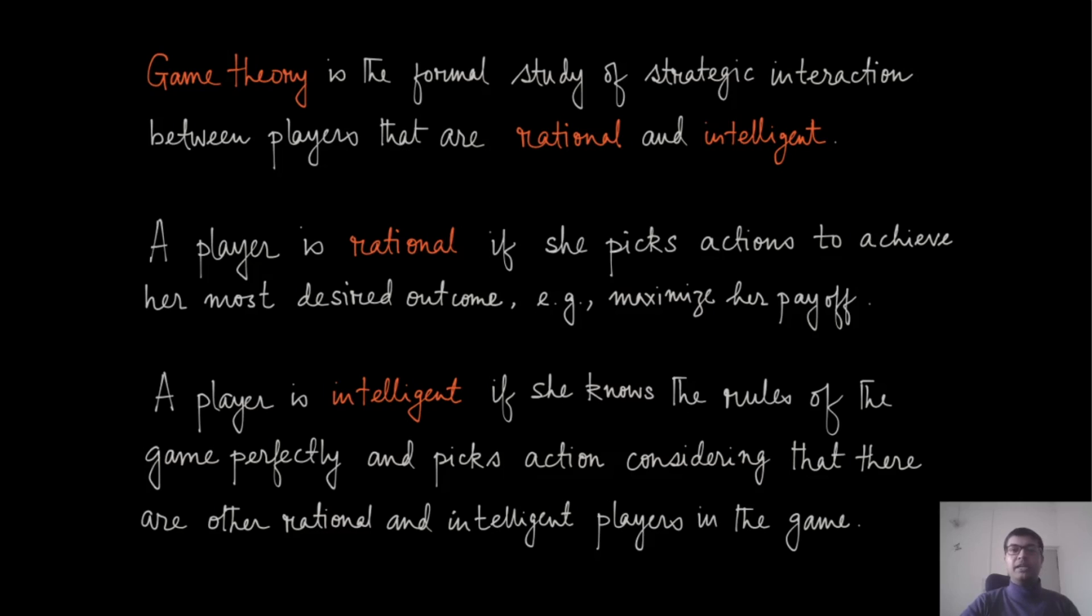What intelligence says is that the player is not just trying to maximize the payoff in some one-dimensional way—it also thinks about the other players and what they can do. It knows completely the rules of the game, and they can also assume that the other players who are also playing against them are also rational and intelligent. Therefore, picking an action which is optimal should be something which takes care of the rationality and intelligence of the other players. This point will also become more clear when we talk about more examples.